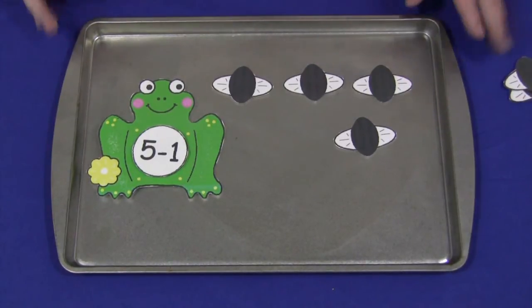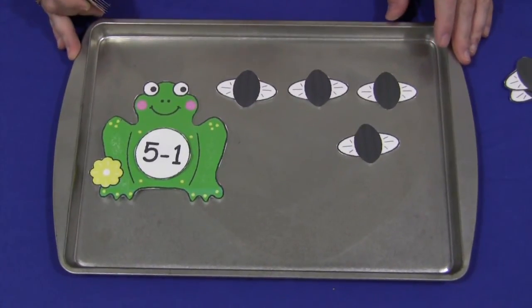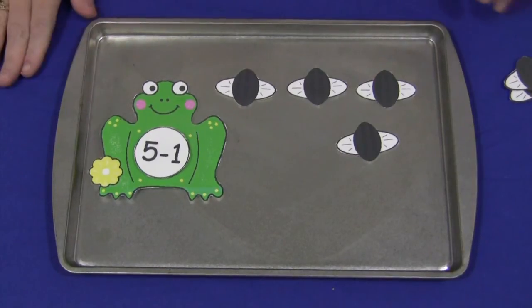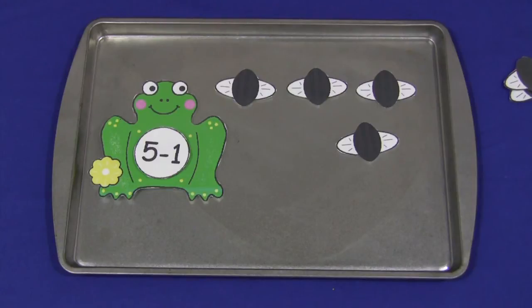So again, this is really a lot of fun. The children really enjoy the frog and the fly matching. You can have it set up in any center. You don't have to have it on a magnetic sheet. You can just have it on a table. You could do it on a felt board. There's lots of ways you can do it, but I find that the magnetic board is a lot of fun for the children.